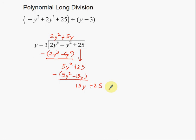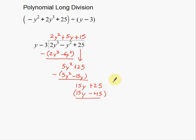Start the process again. Y times what gives me 15y? Just 15, so plus 15. 15 times y is 15y, and 15 times negative 3 is negative 45. These constants will combine. 15y minus 15y is zero. 25 plus 45 gives a nice even 70.